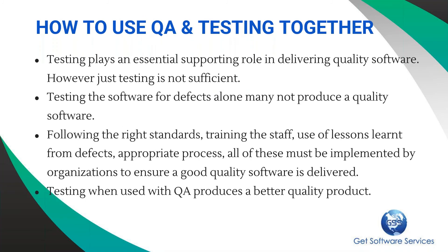It is important that we use quality assurance and testing together — just testing alone is not enough to produce quality software. Just finding defects is not sufficient. We need the right process in place, rules to follow, discussions about lessons learned, what things can be avoided, and what good things can be included so that the quality of the product can be increased. QA will ensure you are following a good process, and testing will ensure the software is the right one and does not impact the customer.